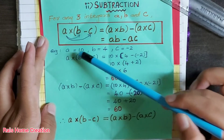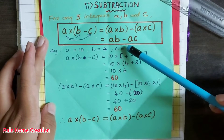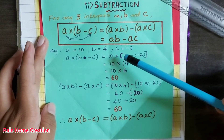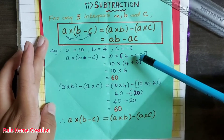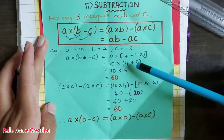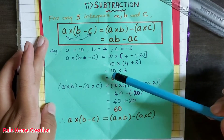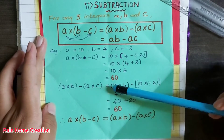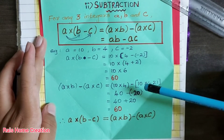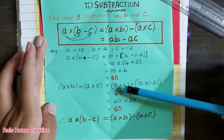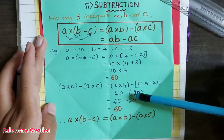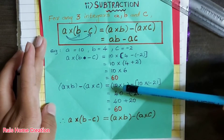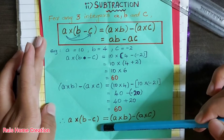Example: a equals 10, b equals 4, c equals minus 2. A into (b minus c) equals 10 into (4 minus minus 2) equals 10 into (4 plus 2). 4 plus 2 equals 6, so 10 into 6 equals 60. A into b minus a into c equals 10 into 4 minus 10 into minus 2. 10 into 4 equals 40, minus of minus 20 gives 40 plus 20 equals 60. Both answers are the same, hence the property is verified.